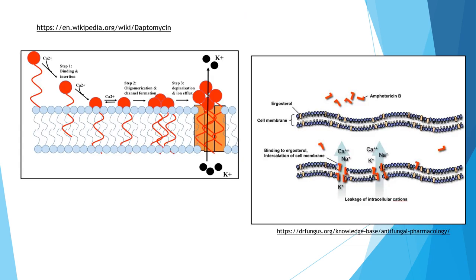On the cell membrane, two antibiotics are relevant. Daptomycin works by creating holes in the cell membrane causing rapid depolarization. Amphotericin B, a commonly used antifungal, binds to ergosterol and increases the permeability of the cell membrane, causing leakage of intracellular ions. So daptomycin causes holes and rapid depolarization, while amphotericin B increases membrane permeability.